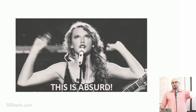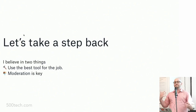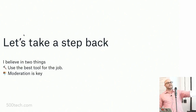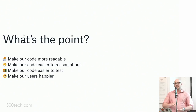I believe in two things. Number one, you should be using the best tool for the job — use the best pattern, use the thing that makes sense. And number two, moderation is key with everything. So what's the point? We want to make our code more readable, easier to reason about, easier to test, and we want to make our users happier. The thing we're optimizing for here is happiness — both developer happiness and user happiness.